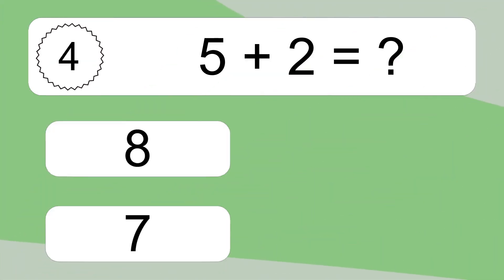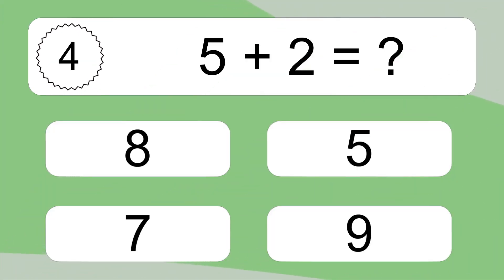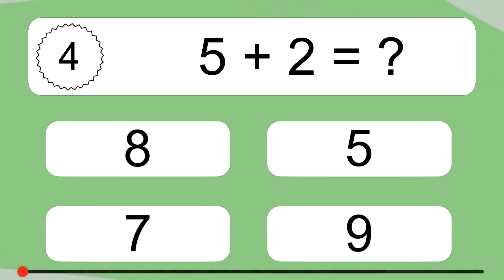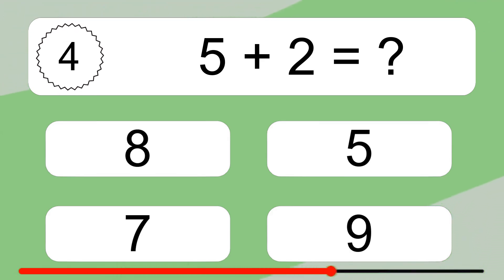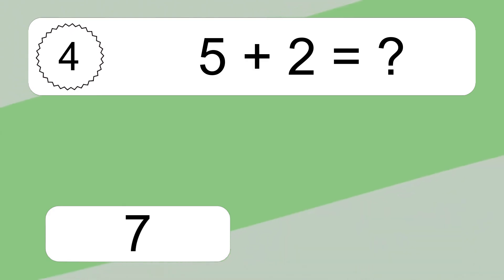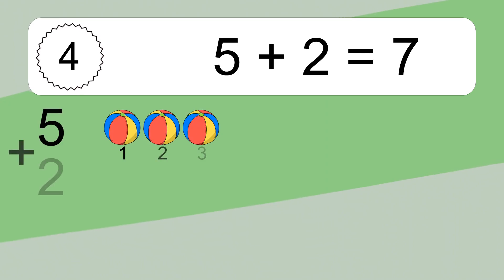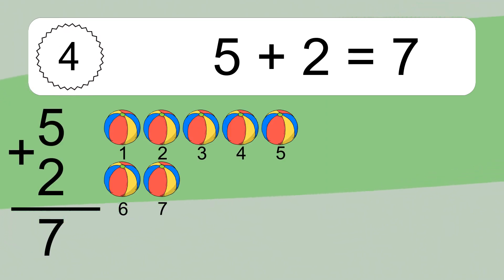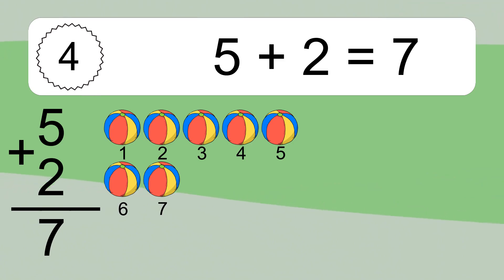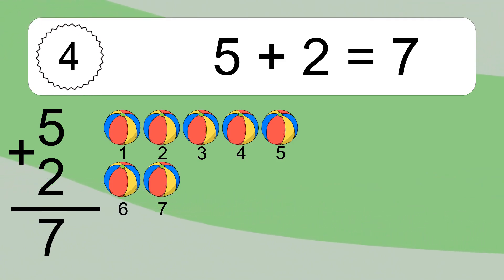5 plus 2 equals what? 5 plus 2 equals 7. Let's count it: 1, 2, 3, 4, 5, 6, 7.